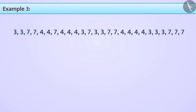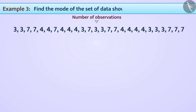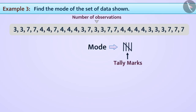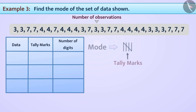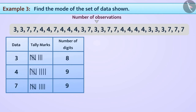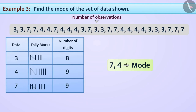Let us look at an example for finding the mode of a set of data. As you can see, there are many observations, so we will use tally marks to find the mode. We will create a table with the data in the first column, tally marks in the second column, and the frequency in the third column. Going from left to right and making tally marks, we can infer that both 7 and 4 have occurred most frequently, at 9 times each. Hence, 7 and 4 are the modes for the provided data set.